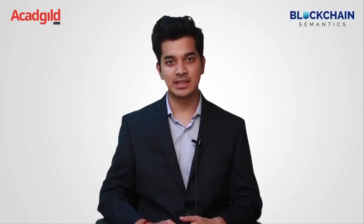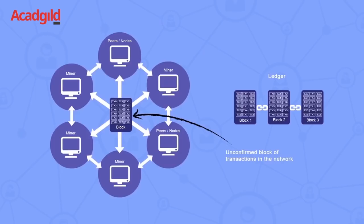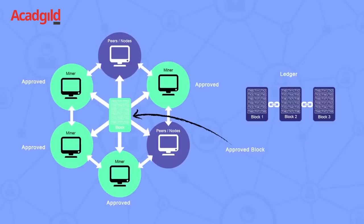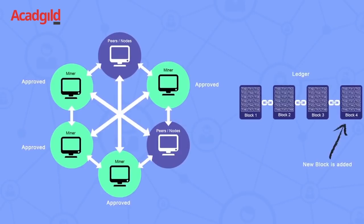A blockchain is a decentralized and distributed digital ledger that is used to record transactions across many computers, so that the record cannot be altered retroactively without the alteration of all subsequent blocks and the collusion of the network.